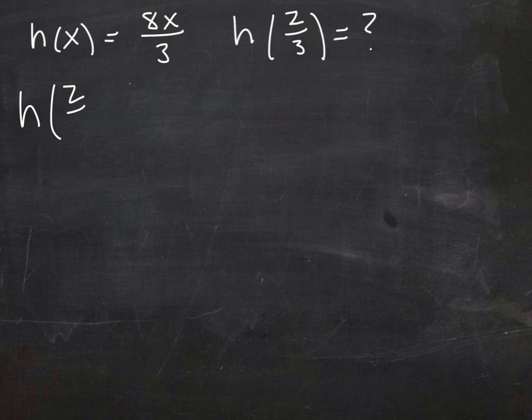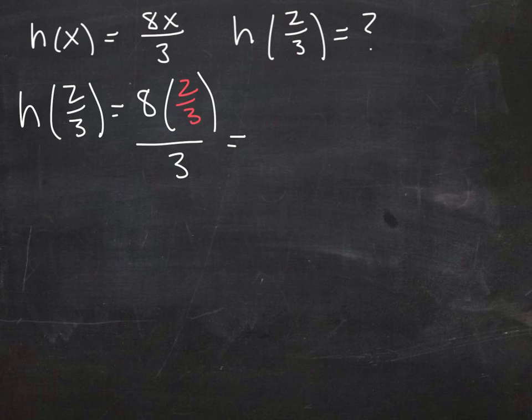What we're being asked to do is substitute in the x value of two-thirds into this equation. So this would drop a two-thirds in where the x is, and then we move from there. Now most students know that this becomes sixteen-thirds here.